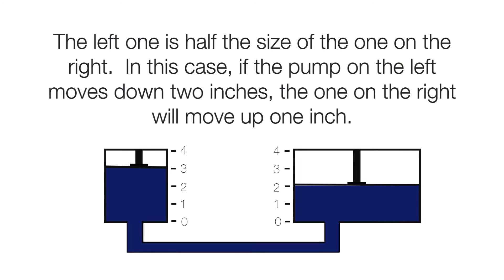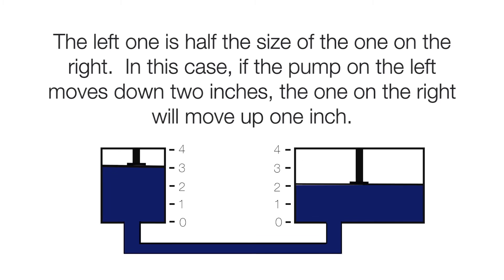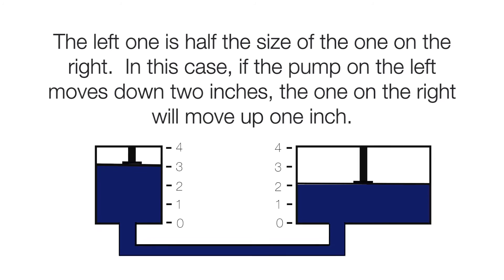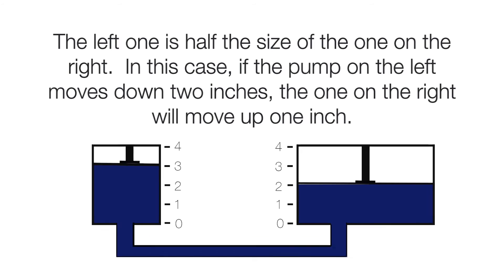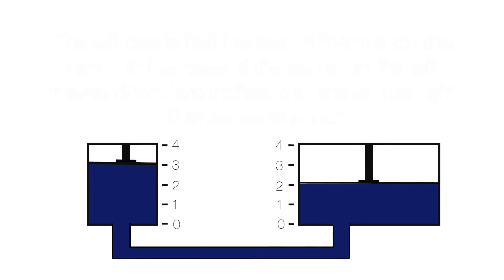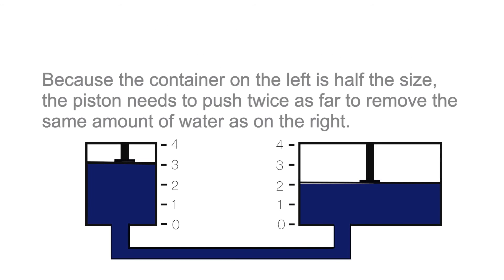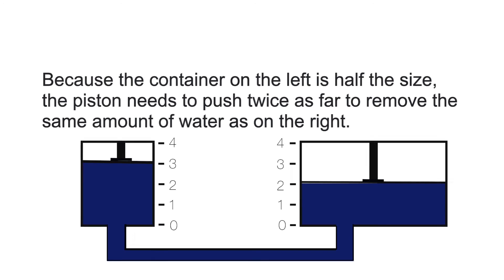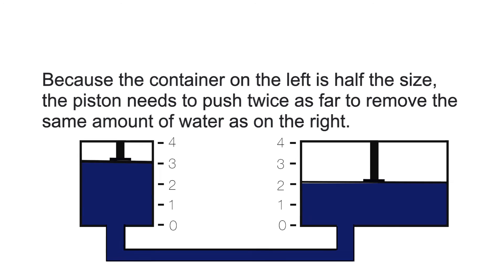Another example. Here are two vats again. The left one is half the size of the one on the right. In this case, if the pump on the left moves down two inches, the one on the right will move up one inch. That's because the mechanical advantage is such that only half the force needs to be used on the left, but it needs to be pushed twice as far.